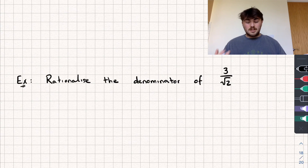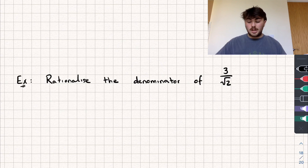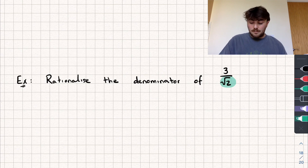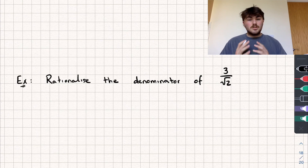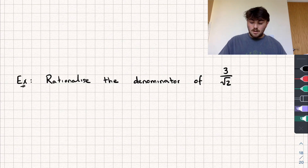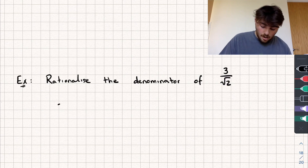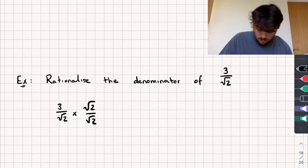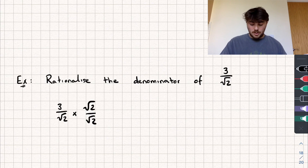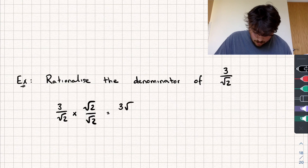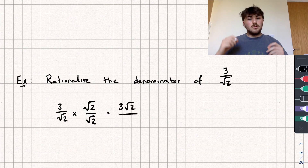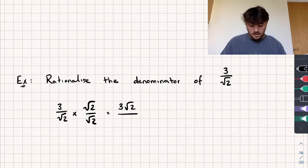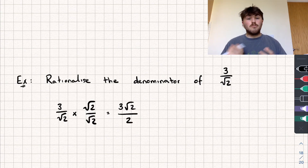Now let's look at rationalising the denominator. Rationalising the denominator means we want to eliminate the square root from the denominator of our fraction. In the easiest case, you just have the square root of a number on its own — like 3 over √2. What we do is multiply the fraction on both the numerator and denominator by whatever the denominator is — so we multiply by √2 over √2. We can do this because √2 over √2 equals 1, so it doesn't change the fraction. This gives us 3√2 over (√2 times √2), which by our last rule is just 2. So the answer is 3√2 over 2 — we've rationalised the denominator.